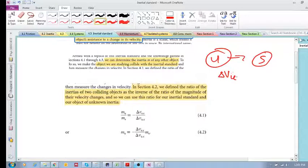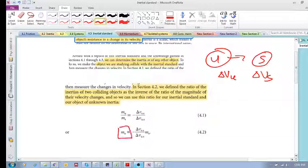We have Delta V of the unknown and Delta V of the standard. We know that the inertial ratios of the unknown to the standard is the inverse of the change in velocity ratios. So the inertia of the unknown divided by the inertia of the standard equals the change in velocity of the standard divided by the change in velocity of the unknown. This allows us to calculate the inertia of the unknown quantity.